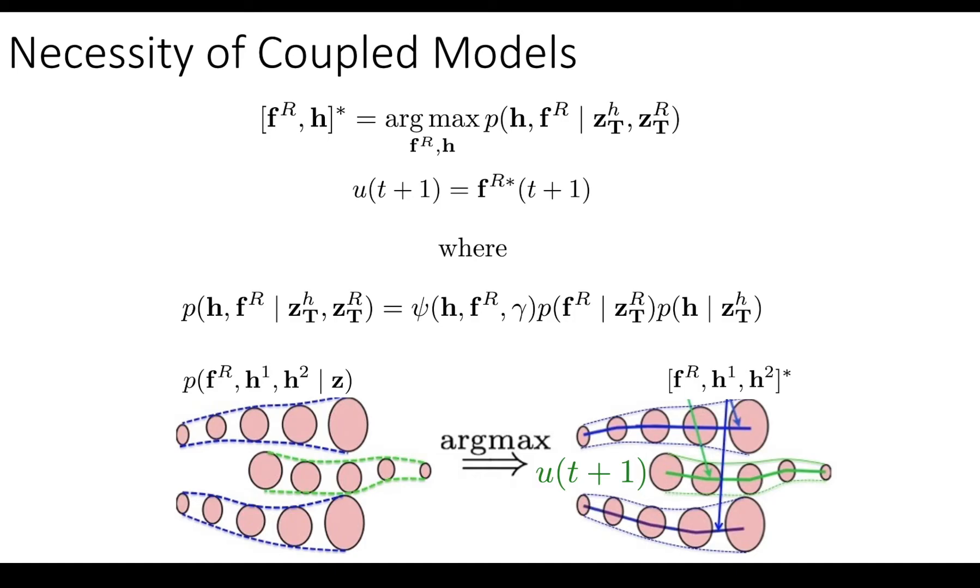I also want to point out, this is important for this paper, that we're going to choose a particular factorization of this joint distribution in which we have two individual agent models. So the robot agent model, P of FR, and the human agent model, P of H. And those models don't capture any interaction. They're just how the agents would move if they were completely alone. And then we have an interaction function psi with parameters gamma.